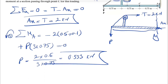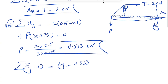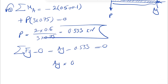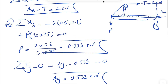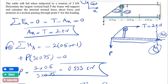Now that we have P, we can do ΣFy = 0. In the y-direction we have Ay minus P (0.533 kN downward) equals 0, so Ay = 0.533 kN. No negative sign, which confirms our assumed directions for Ax and Ay were correct. Now we have all the unknowns and we can proceed to the section at point C and draw the free-body diagram to find the internal forces and bending moment.